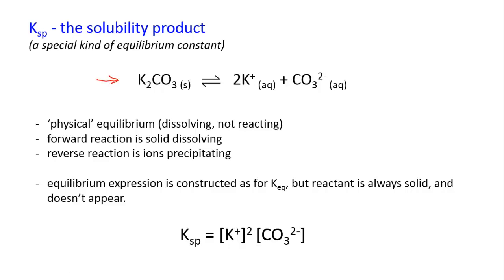Here's an example: we've got potassium carbonate put into water. The forward reaction in this equilibrium is that the solid dissolves into aqueous ions free in solution, while the reverse reaction is that free ions in solution re-precipitate as the solid. Bear in mind this is a physical equilibrium — we're not producing any new compounds, just moving between the solid and aqueous state, but it is nevertheless a true equilibrium.